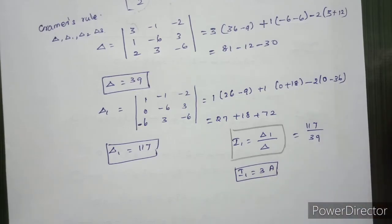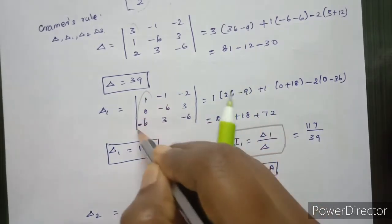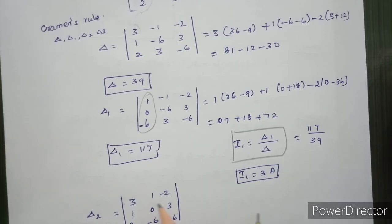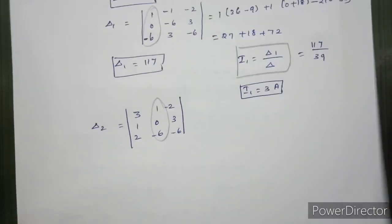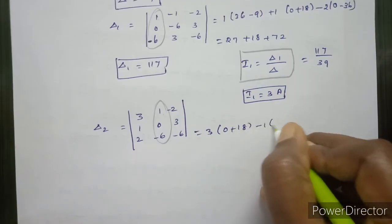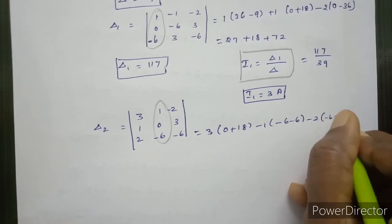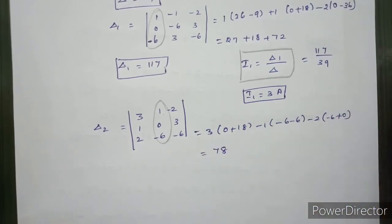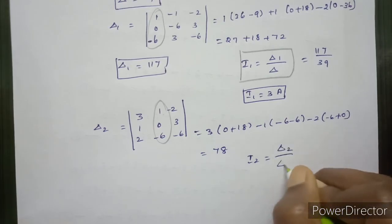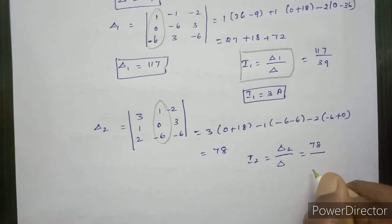For delta2, we replace the second column with the constants [1, 0, -6]. The second column is replaced and the determinant value is computed. Delta2 equals 78. Therefore I2 equals delta2 divided by delta equals 78 divided by 39, so I2 equals 2A.